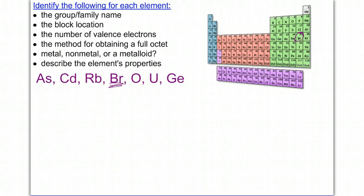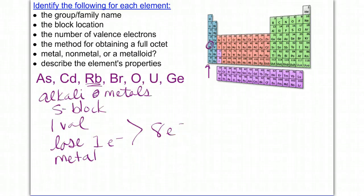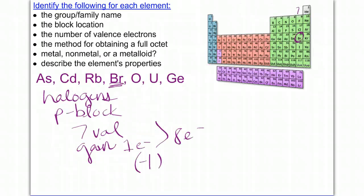Bromine is located here. It's number 35, and so it's in group seven, and that group name is the halogens. It's located in the P block. It has seven valence, and so it will gain one electron in order to achieve a full octet, and that's going to give it a charge of negative one when it gains that one electron. For the one prior to, I didn't state that. However, because it will lose one electron, it will get a charge of plus one.